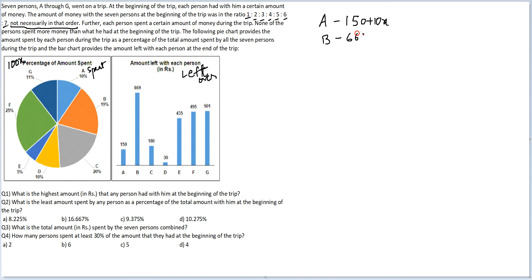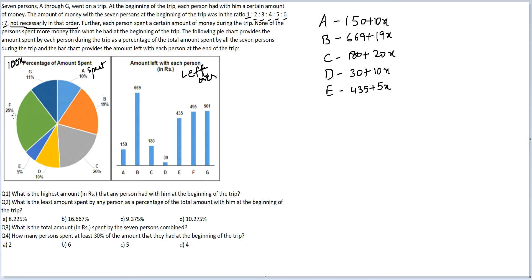B will have 669 plus 19X. C will have 180 plus 20X. D will have 30 plus 10X. E will have 435 plus 5X. F will have 495 plus 25X. And G will have 501 plus 11X. These are the amounts that these people had at the beginning.